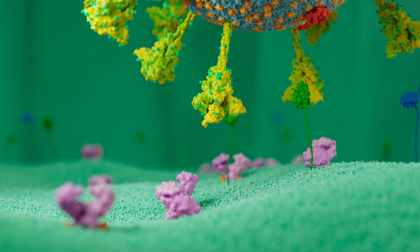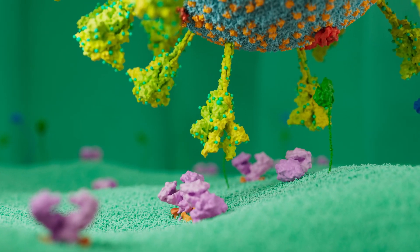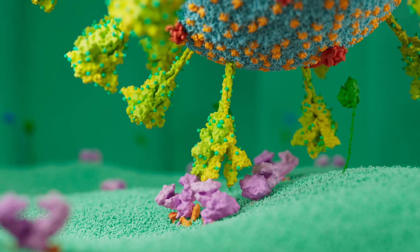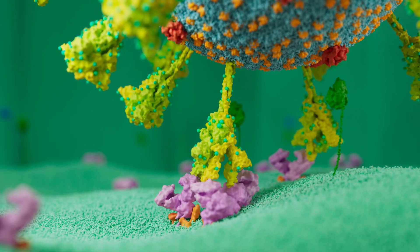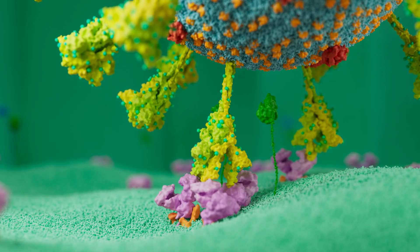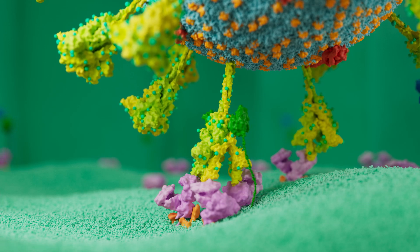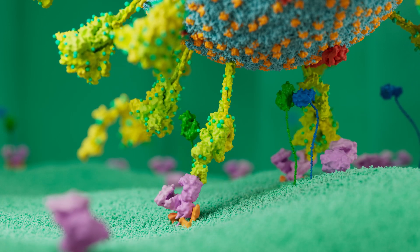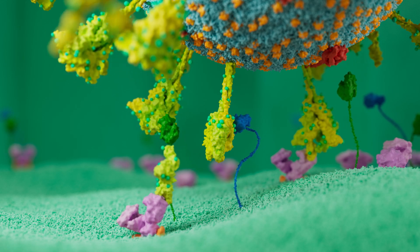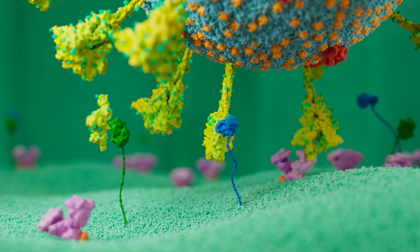When the virus closes in on a host cell, its spike proteins open up and bind to a receptor on the host cell. The outer part of the spike protein is then cut off by a protein on the host cell membrane. This frees the inner core of the spike protein, which is cut open.